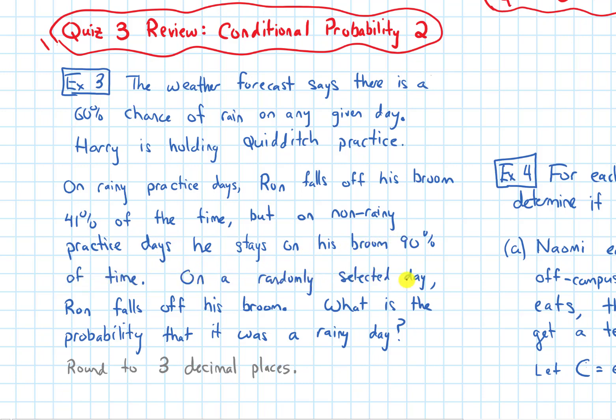On a randomly selected day, Ron falls off his broom. What is the probability that it was a rainy day? Round to three decimal places.